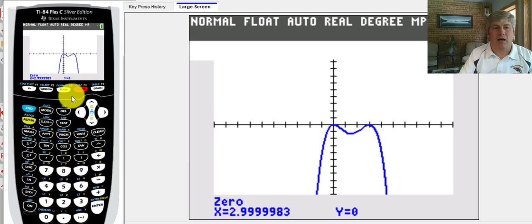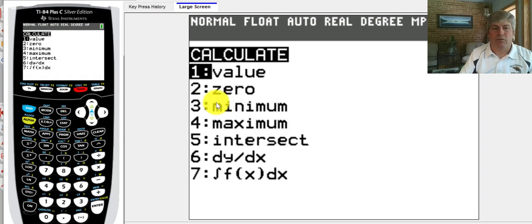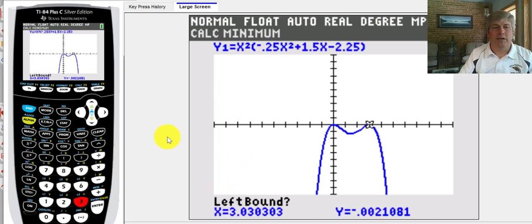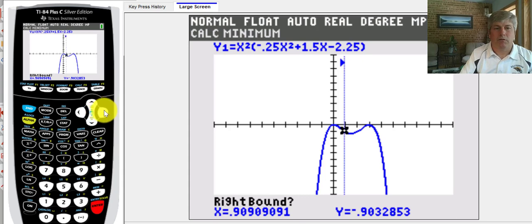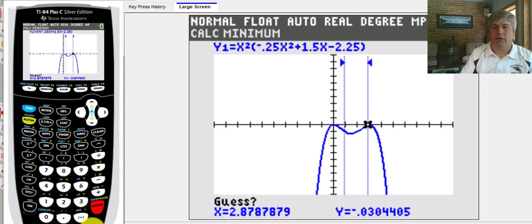Again, I think we can go to the same thing. Go to second and calc. And we want to find the minimum value three. And we need a left bound. So I need to get to the other side of our minimum here. It says up here we're calculating the minimum. Hit enter. Hit enter. We'll trace to the other side of it to create a right bound. Hit enter. Hit enter again.